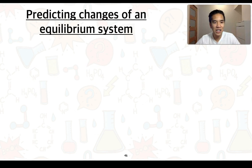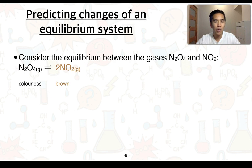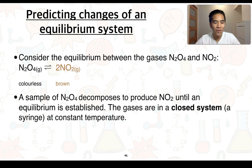To predict changes of an equilibrium system, we're going to reconsider the reaction of N2O4 and NO2. A sample of N2O4 decomposes to produce NO2 until equilibrium is established. These gases are in a closed system, which would be something like a syringe at a constant temperature.